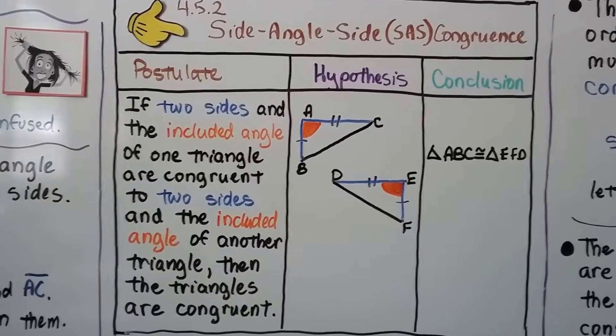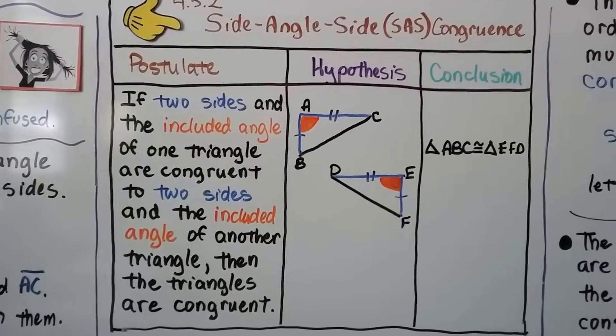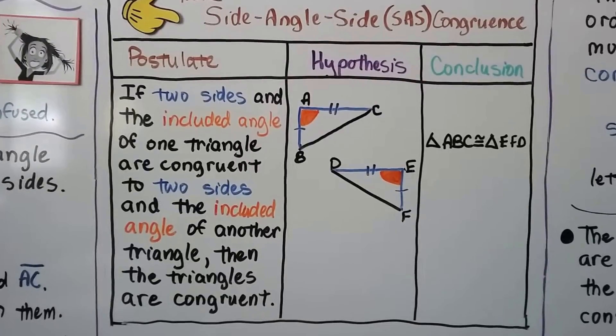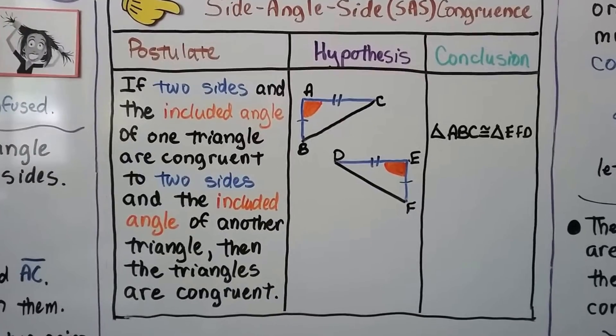We can see triangle ABC is congruent to triangle EFD. They have congruent sides and between them they have a congruent angle.